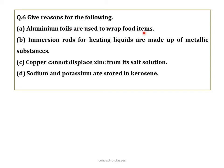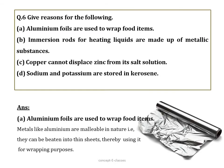Question number six — give reasons. (a) Aluminium foils are used to wrap food items: metals like aluminium are highly malleable — they can be beaten into very thin sheets such as aluminium foil, making them useful for wrapping purposes. Aluminium is also not reactive with food.